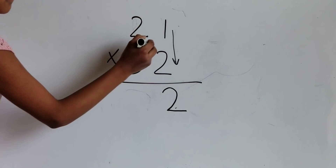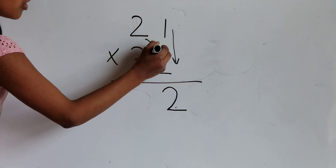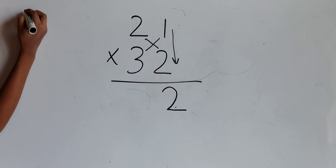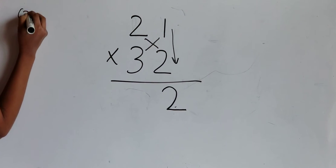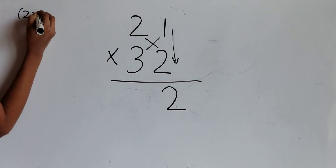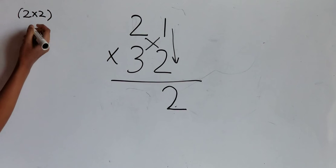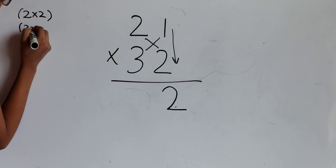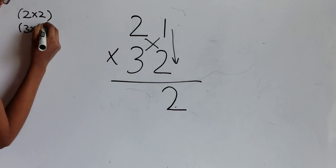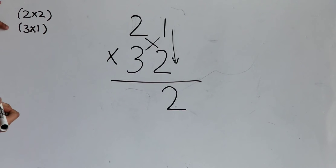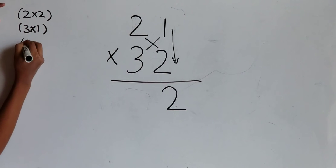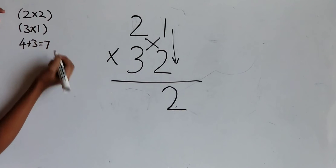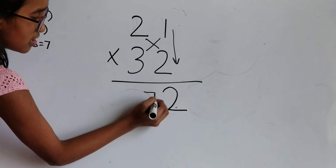Next, multiply 2 times 2 plus 1 times 3. 2 times 2 is 4. 3 times 1 is 3. 4 plus 3 equals 7. Write 7 in the middle.